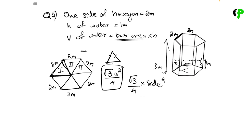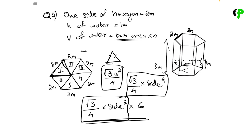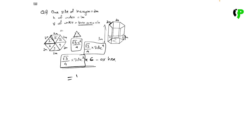A regular hexagon has 6 triangles. So the area of the hexagon formula is: (√3/4) × side² × 6. We substitute side = 2 meters, so it becomes (√3/4) × 2² × 6, which gives 6√3.